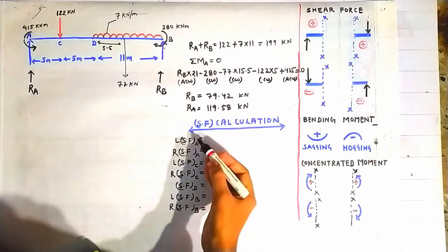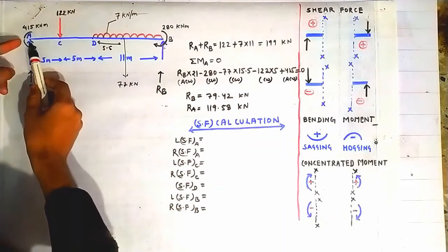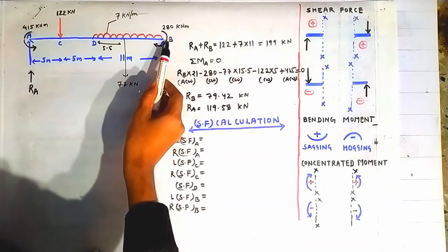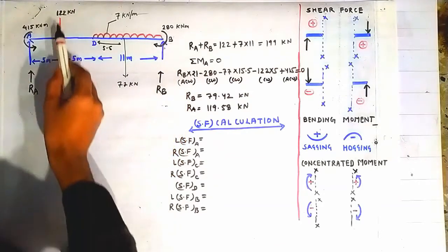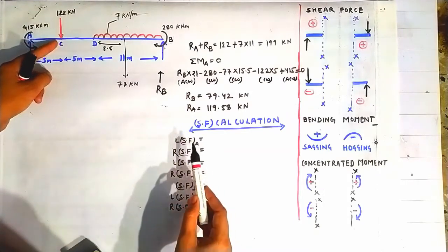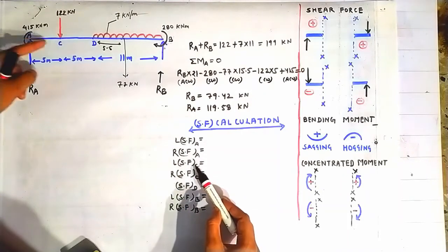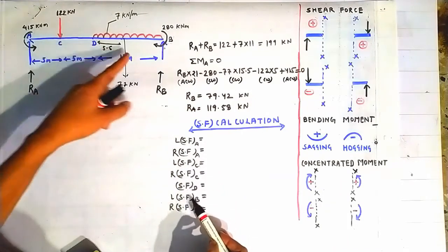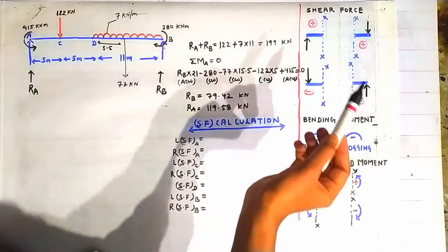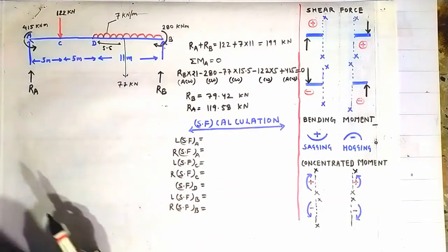Now we will calculate the shear force at various points A, C, D, and B. There is a point load at A and B in the form of reactions, and a point load of 122 kN acting at point C. That is why we calculate shear force on the left and right side of A, left and right side of C, and left side of B. At point D we calculate shear force directly because there is no point load acting there.